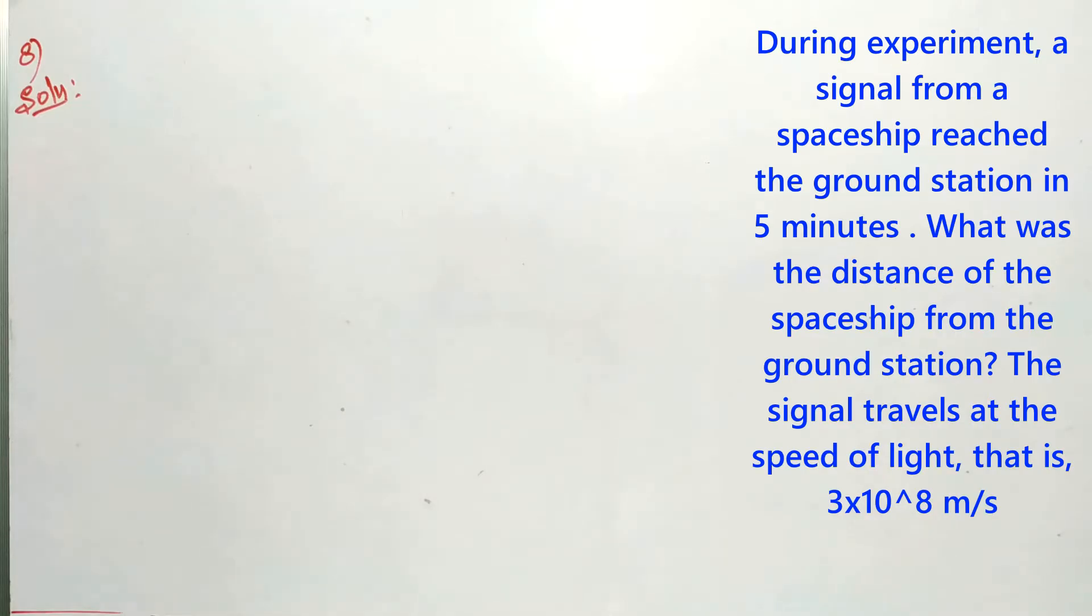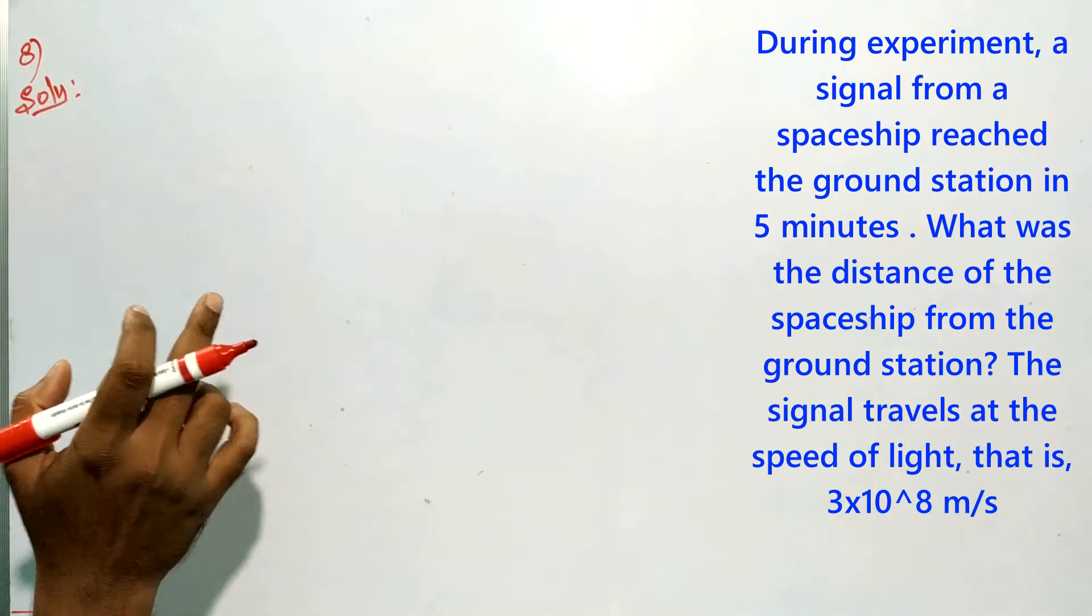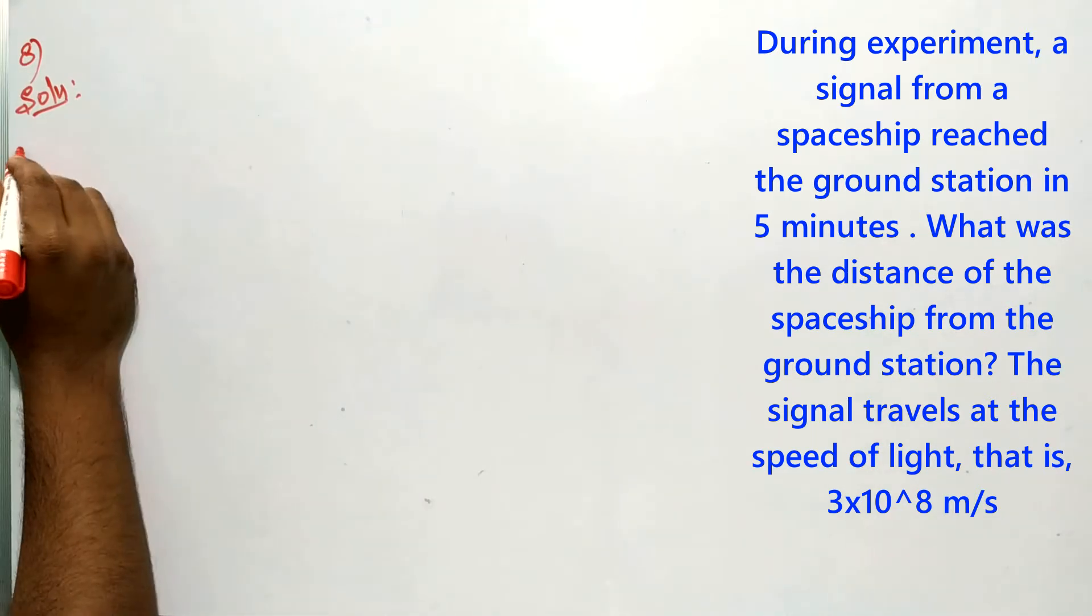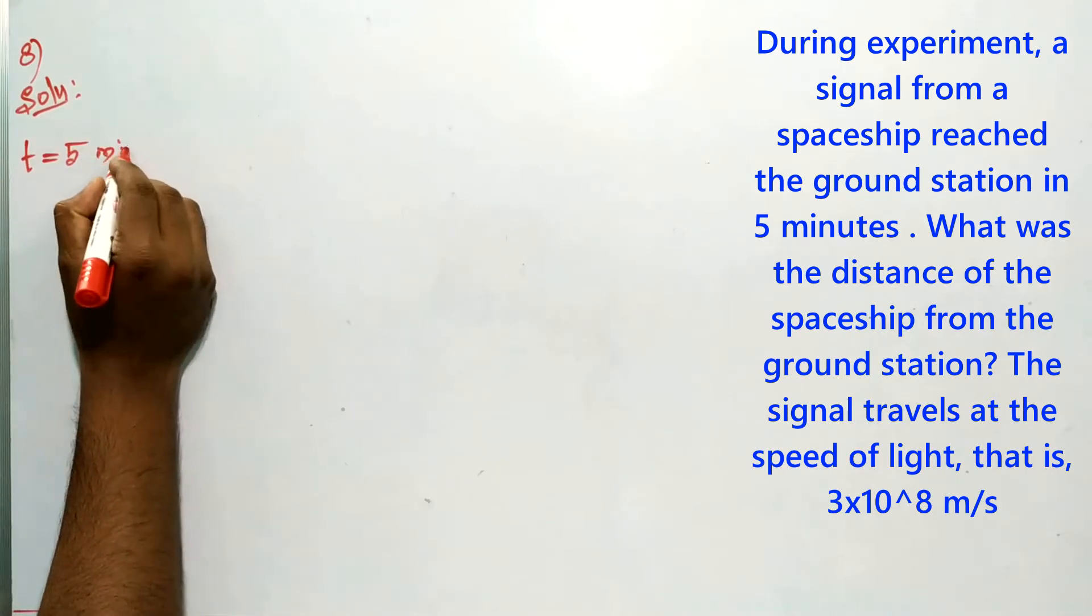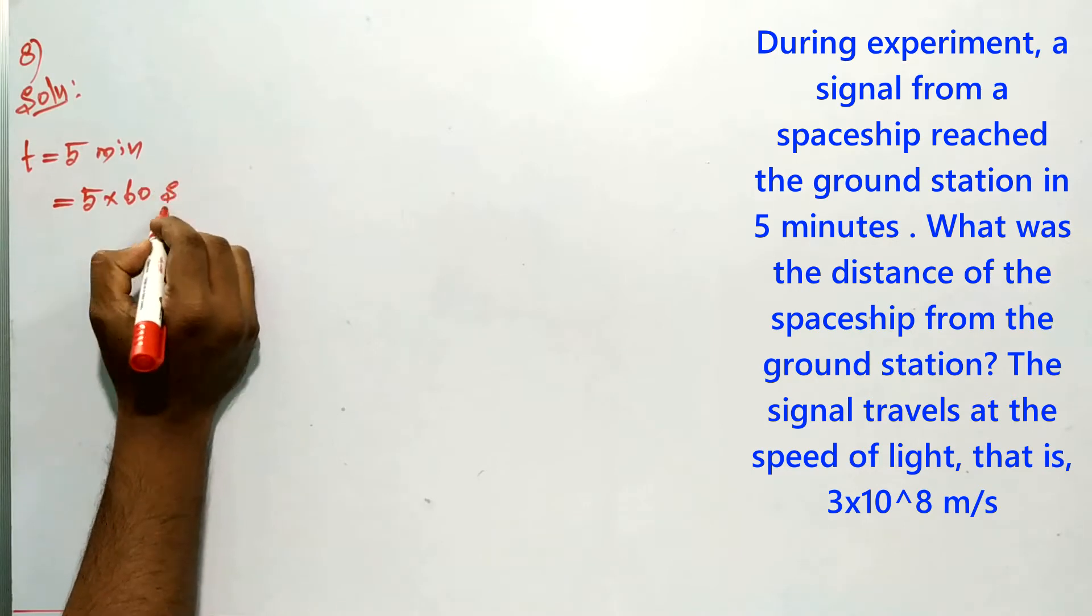A signal from a spaceship reached the ground station in 5 minutes, so time t equals 5 minutes. Convert into seconds: 5×60 seconds, that means 300 seconds.